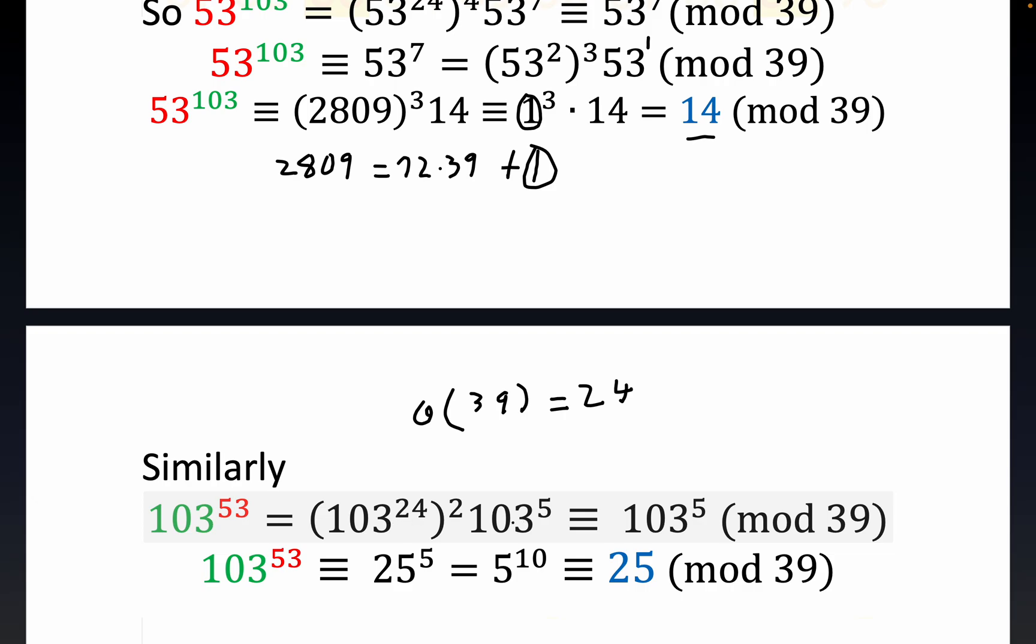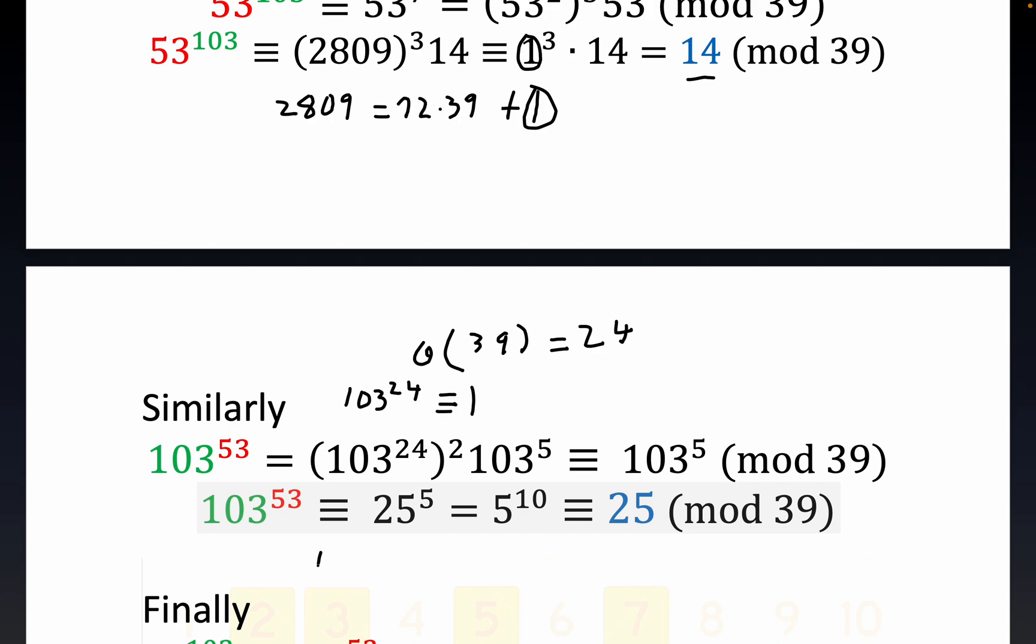And so a lot of this stuff reduces very fast. 103 to the 24th is congruent to 1. 103 raised to the 24th power is congruent to 1, and you see how important this is? In other words, who would want to raise that up and then try to reduce it modulo 39? That would be very tedious, and almost a certain error would occur. So this part just becomes 1. That's why we have 103 to the 5th. And the rest of this, where did I get the 25? 103 is congruent to 25. And that's easy to see. 103 minus 25 is 78. So 103 is congruent to 25. You can verify that.